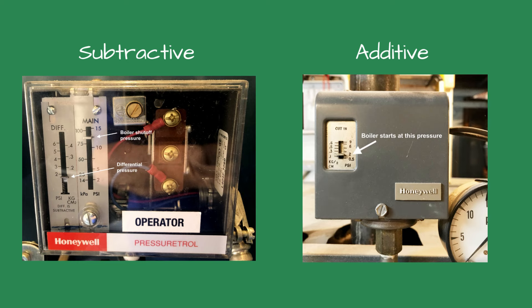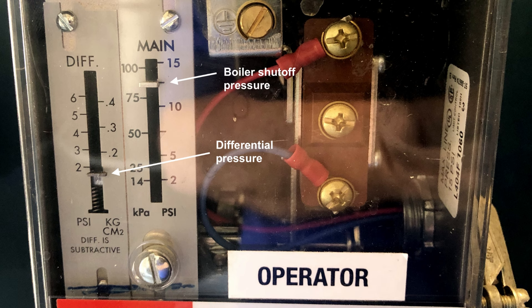A question I'm often asked is how to properly adjust the steam boiler pressure controls. While it seems pretty straightforward, it's sometimes confusing because there are two different types of pressure controls for a boiler: subtractive and additive.